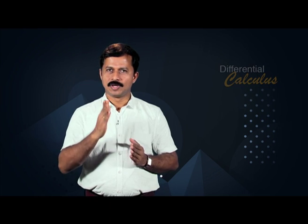As another example, we graph the curve r is equal to 1 plus cos(theta/2) using Cartesian graphs. We first graph r as a function of theta in the Cartesian r-theta plane. Since the cosine has period 2pi, cos(theta/2) has period 4pi, and we must let theta run from 0 to 4pi to produce the entire graph. The arrows from the theta axis to the curve give radii for graphing r = 1 + cos(theta/2) in the polar plane.